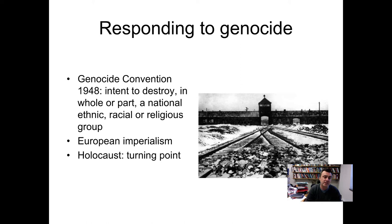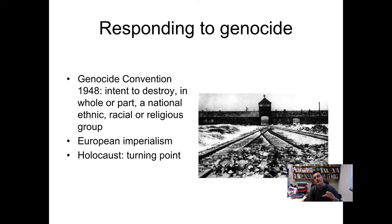We have a genocide convention that establishes when mass murder becomes genocide. It is the intent to destroy in whole or in part a national, ethnic, racial, or religious group — one of the pivots of how the international community started to think about war crimes, codified after the Holocaust. Importantly, it can be just one person being killed on those grounds by the government or by militia acting on behalf of the government, and it would under legal terms qualify as genocide. It doesn't have to be mass murder on a large scale.